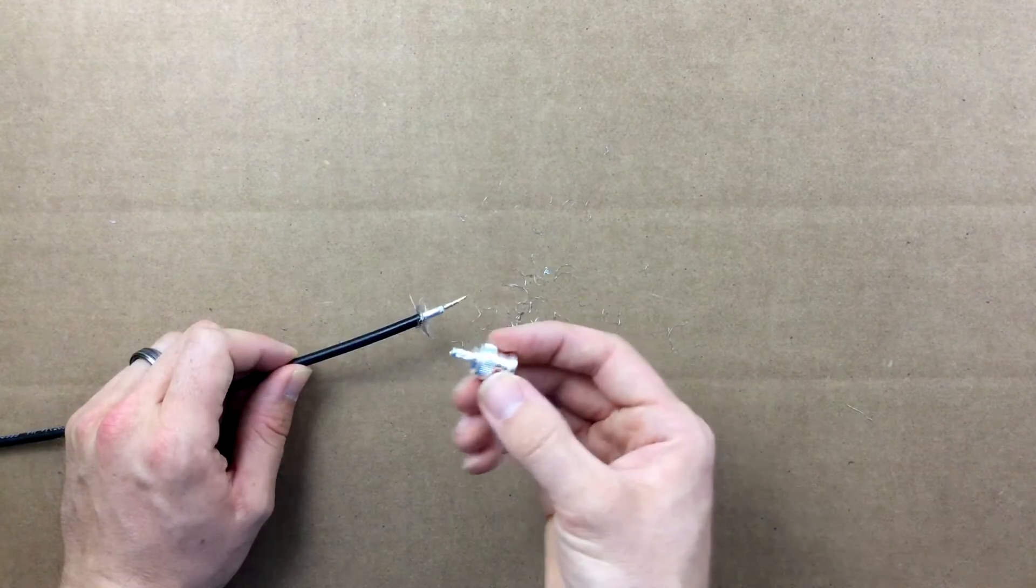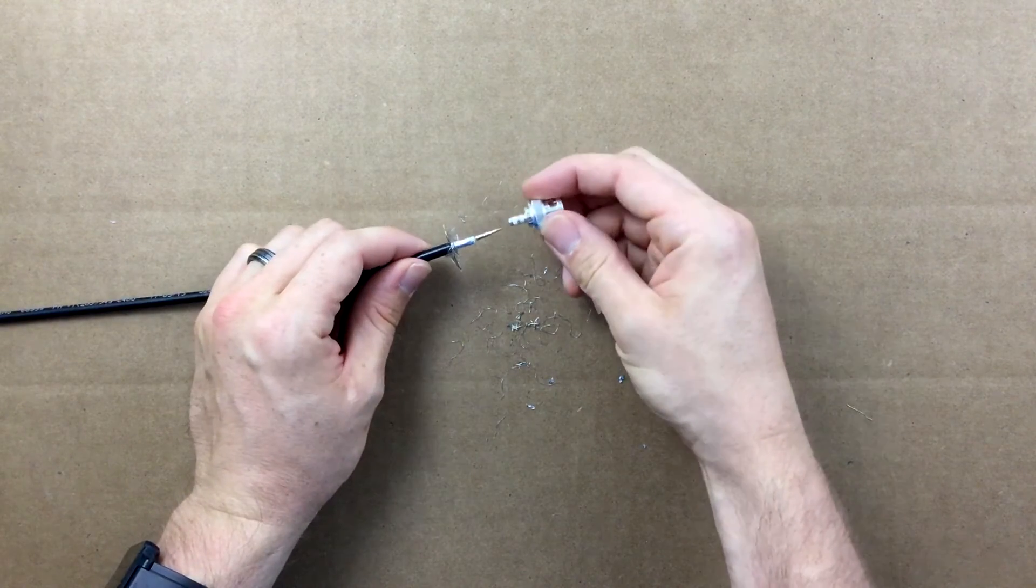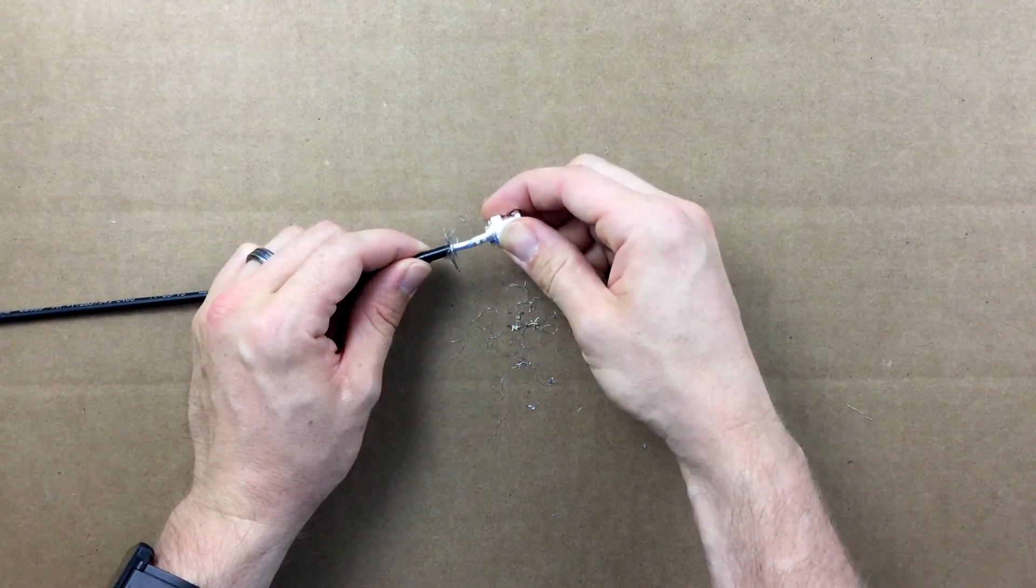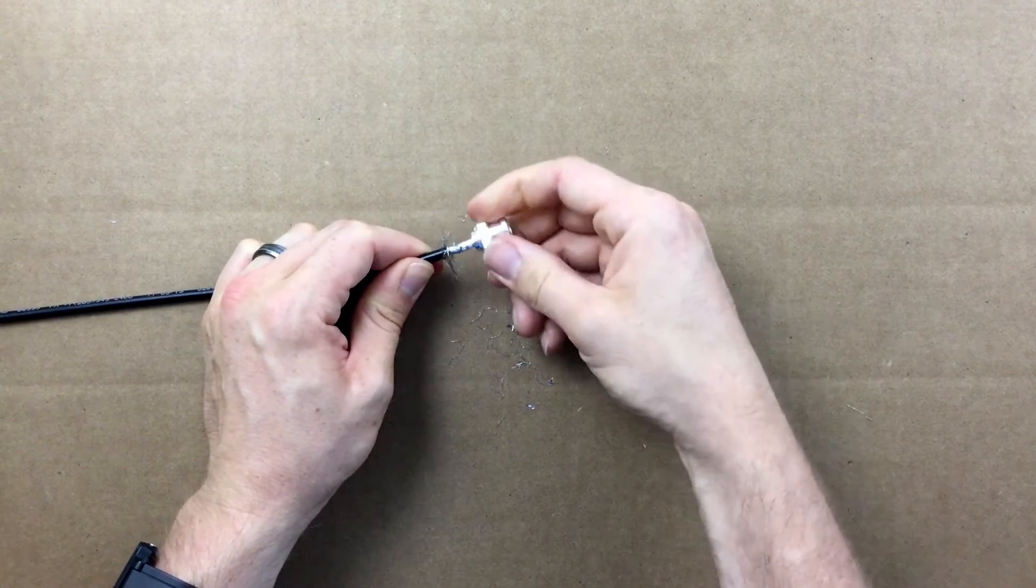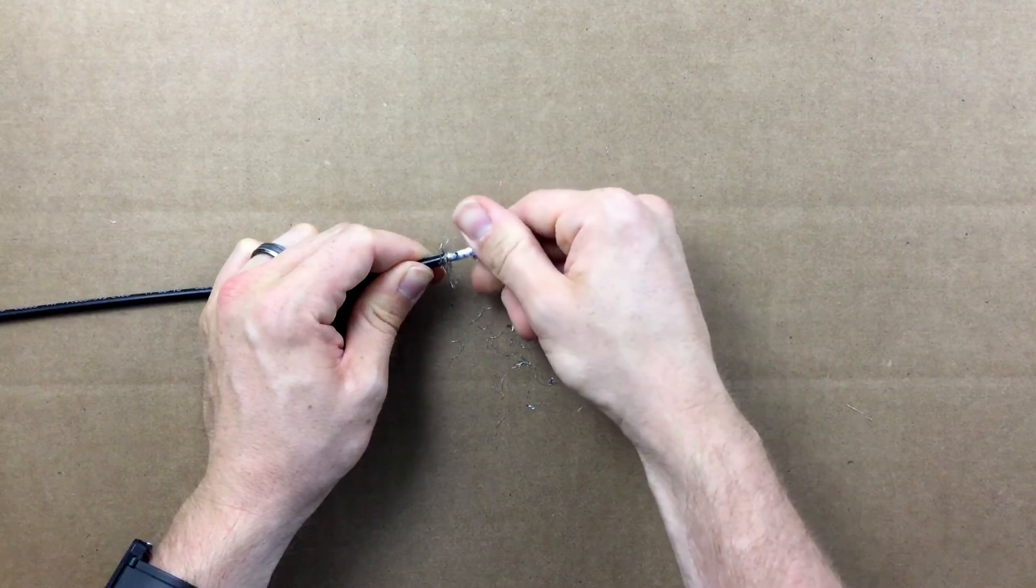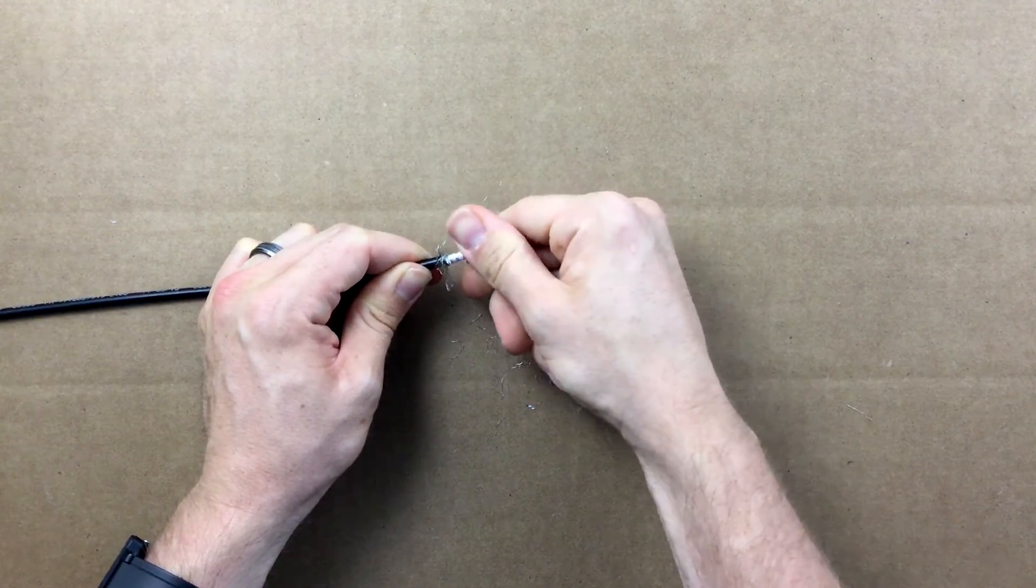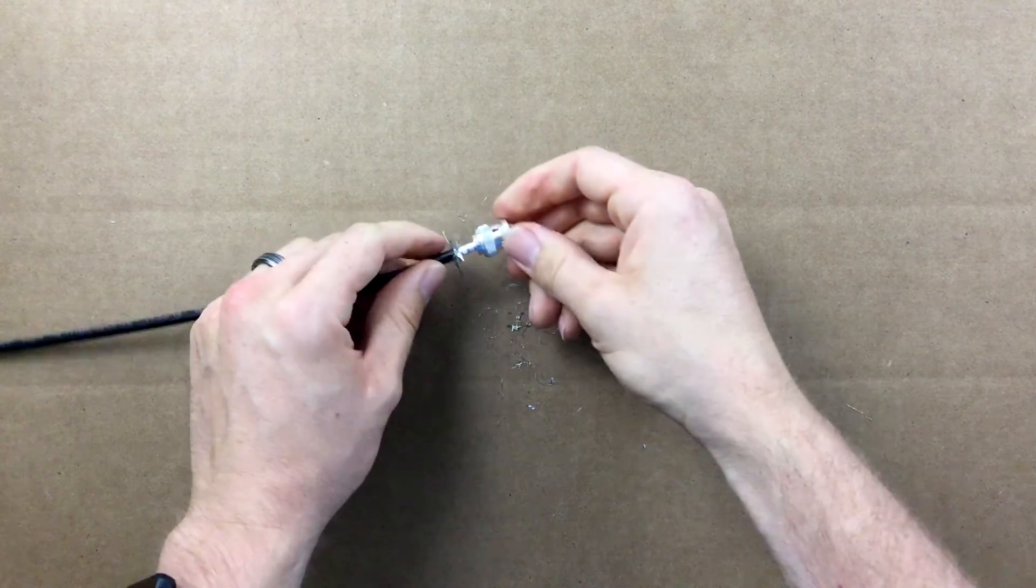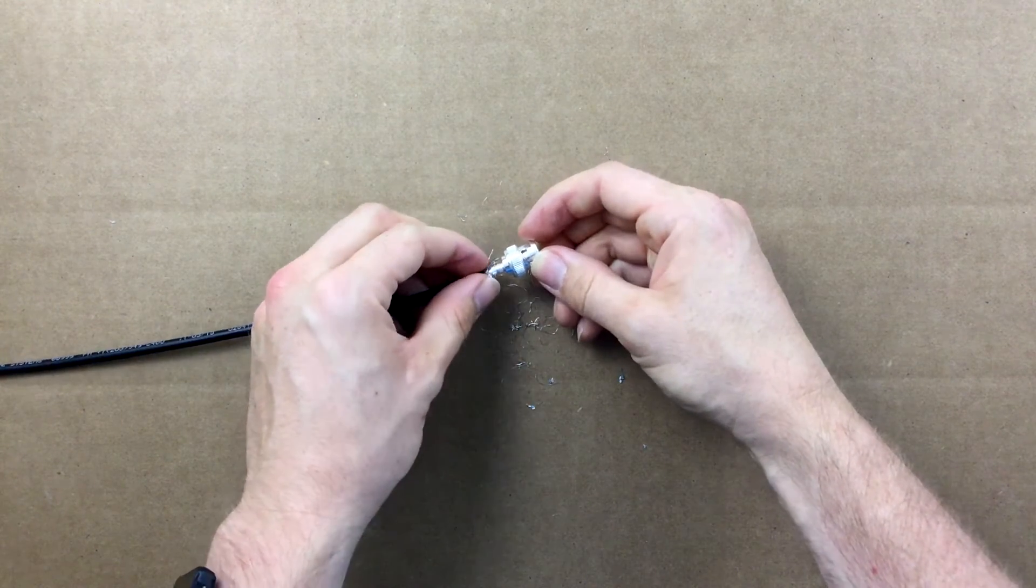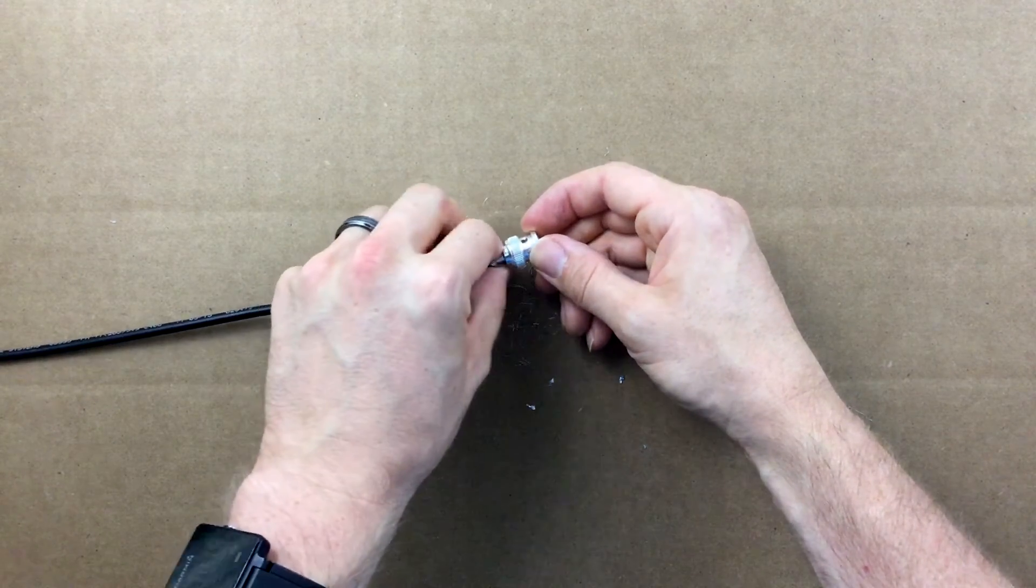Grab the BNC male main body and rotate clockwise while inserting the coax through the bottom of the connector. When fully seated, bend down the strands over the rear portion of the connector body.